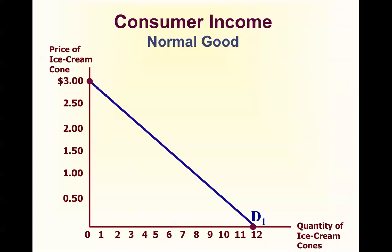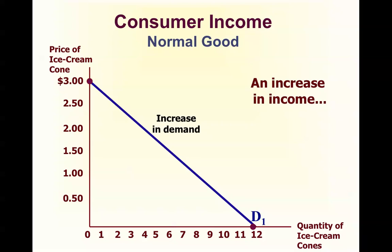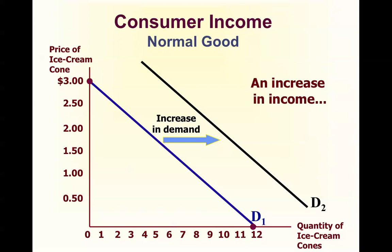Consumer income is the amount of money you have in your pocket. For something known as a normal good, an increase in income will cause an increase in demand — the entire line is going to shift to the right, so at every price you're going to buy more of the good. Examples of normal goods are things you'd buy more of with more income, like going out to movies, going to a nice restaurant as opposed to fast food.